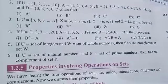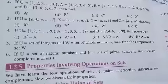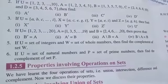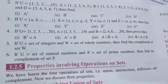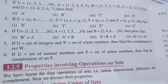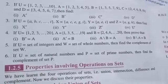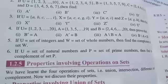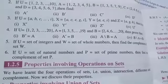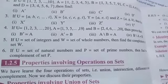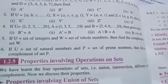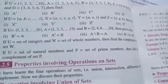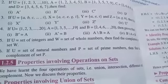Bismillahirrahmanirrahim, assalamualaikum students. Hope you all are fine. Today we will solve question number 3 of exercise 1.3. In this question, the universal set is alphabets a, b, c through i, while X is {a, c, e, g, i}, Y is {a, e, i}, and Z is {a, g}. You have to find the complements of X, Y, and Z.